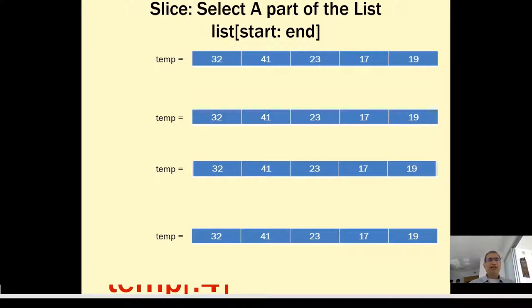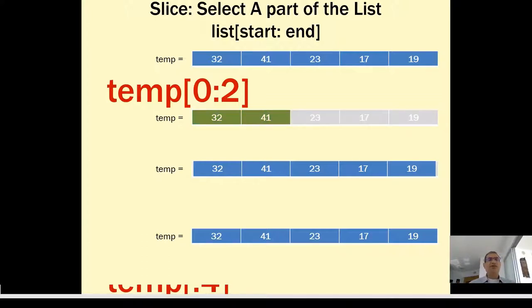Here is a list called temp, a list of temperatures. If I say temp[0:2], start from 0 and go till 2 but do not include 2. So the elements 0 and 1, temp[0] and temp[1], therefore 42 and 41 will get selected, none of the others. That is temp[0:2].